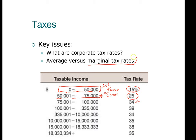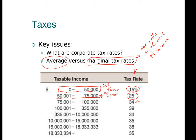These are the marginal rates. The marginal tax rate is the tax rate levied on the next dollar that you earn — so the next dollar of income will be taxed at the marginal tax rate. It is different from the average tax rate. Let's take a look at an example.